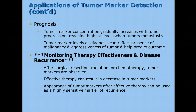Regarding prognosis, tumor marker concentration gradually increases with tumor progression, reaching its highest levels when tumors start to metastasize to other tissues. Tumor marker levels at diagnosis can reflect the presence of malignancy and aggressiveness of the tumor and help predict the outcome. Most importantly, tumor markers are there to monitor therapy effectiveness and disease recurrence. We monitor the levels to see if they're coming down. If they do come down, we say the patient is in remission, and we might draw their blood for the tumor marker every six months for the next few years to make sure the disease is not coming back.